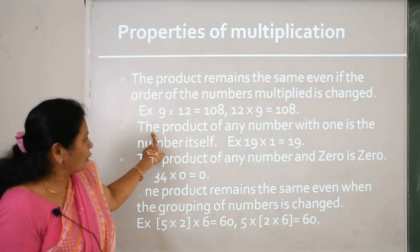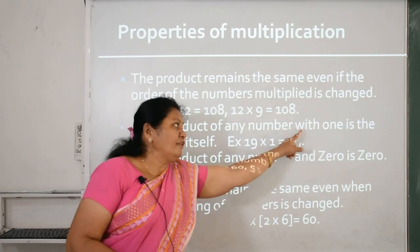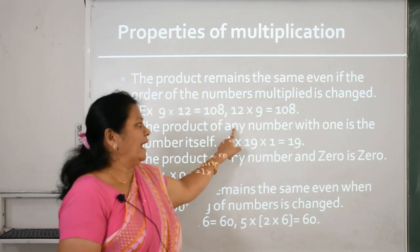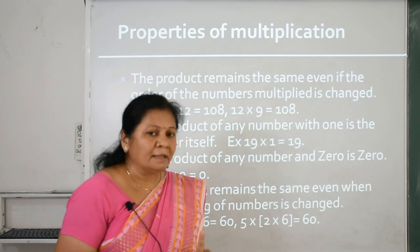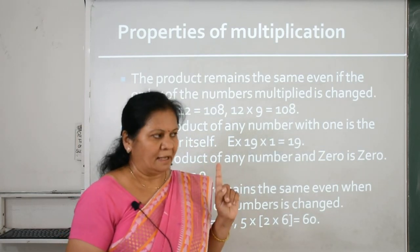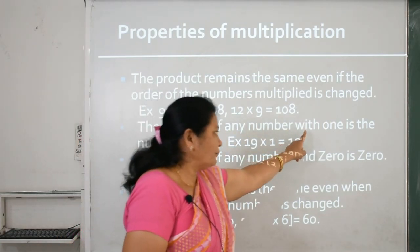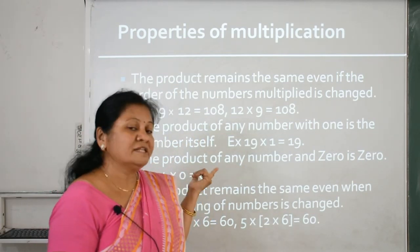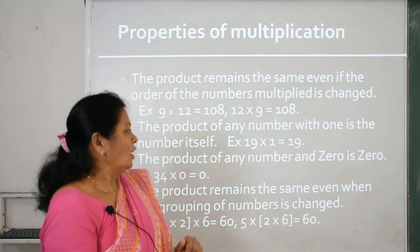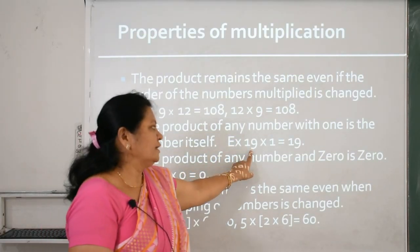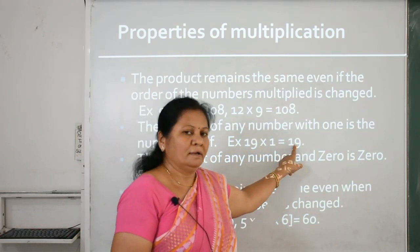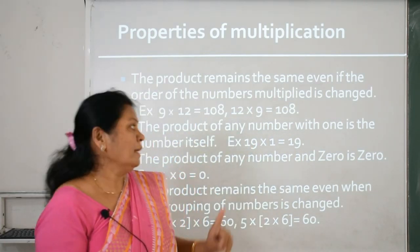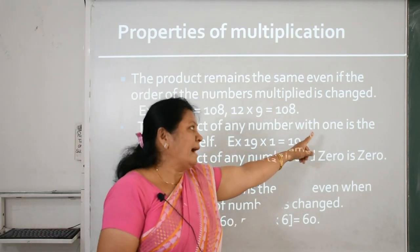Second property: the product of any number with 1 is the number itself. This means if you multiply any number by 1, you get the same number as the answer. For example, 19 multiplied by 1 is equal to 19. So the product remains the same when a number is multiplied by 1.